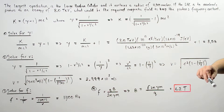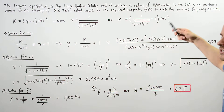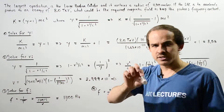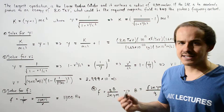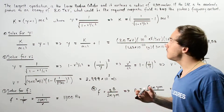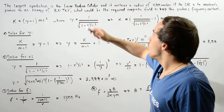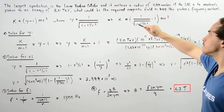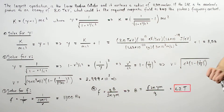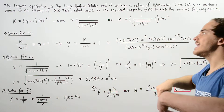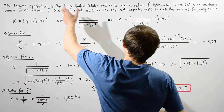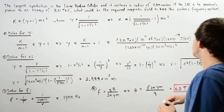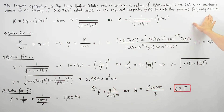If the synchrotron is to accelerate protons to a kinetic energy of one tera electron volt, what would be the required magnetic field when our protons have reached this kinetic energy to keep the proton's frequency constant?